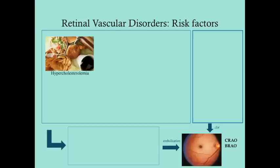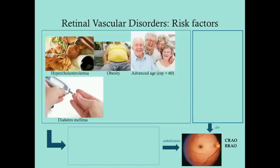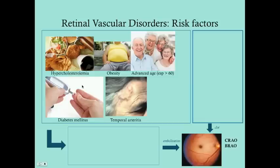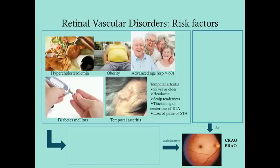Risk factors for CRAO include hypercholesterolemia, obesity, advanced age, and diabetes mellitus — even without obesity or advanced age, diabetes alone is a risk factor. Temporal arteritis is a major risk factor for artery occlusion. Temporal arteritis occurs in people 55 years or older and involves headache, scalp tenderness, and thickening or tenderness of the superficial temporal artery.